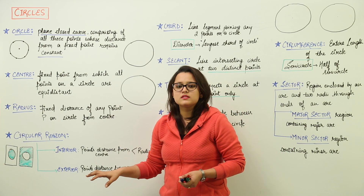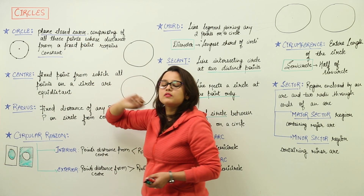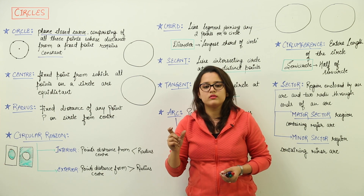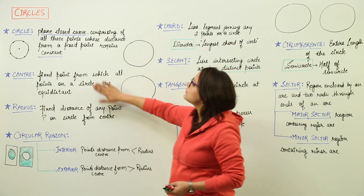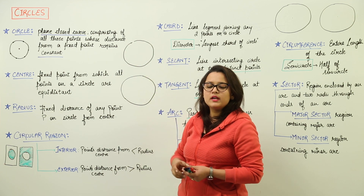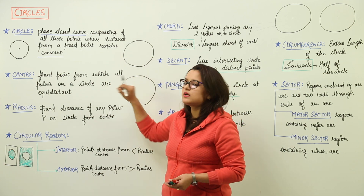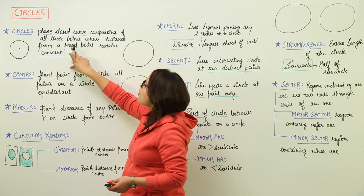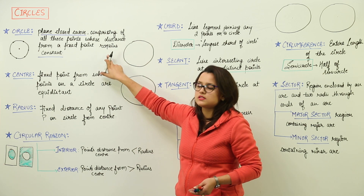Now we are doing circles. What is a circle? A circle is a plain closed curve. You must understand it is a plain closed curve. Plain means it is going to lie on a two-dimensional surface. It is closed means you will not see it opening from any point. It will always have some closed path, and it is a curve because it is not straight. It is a plain closed curve comprising of all those points whose distance from a fixed point remains constant.